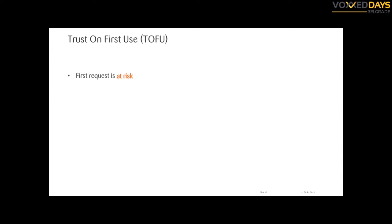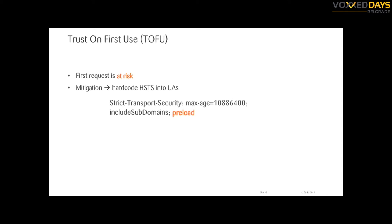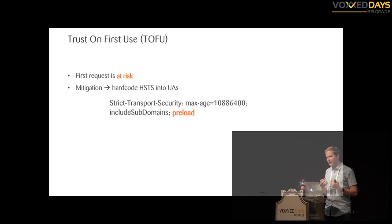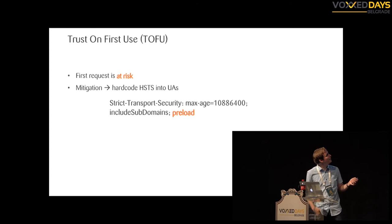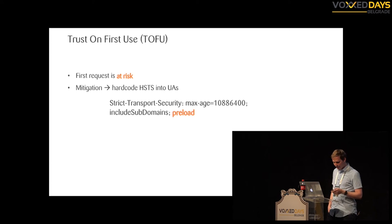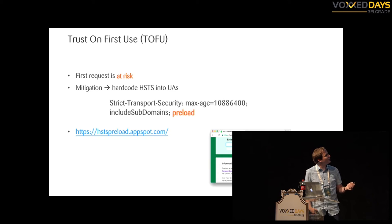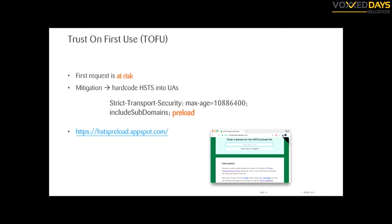There's also the Trust On First Use problem — the TOFU principle — meaning the first request is always at risk. To reduce this risk, it's possible to hard-code HSTS into user agents. That means the browser has a whitelist of URLs that enforce it. You add the 'preload' directive and then register on the preload site. You have to verify domain ownership, have the redirect in place, and have a max-age of at least 18 weeks to get preloaded.